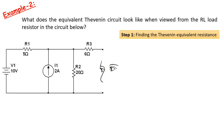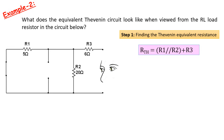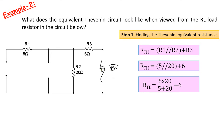Then we need to open-circuit the current sources and short-circuit the voltage sources. Here, we need to short-circuit the voltage source of 10 volts and open-circuit the current source of 2 amps. Now we can find the Thevenin equivalent resistance. Resistors R1 and R2 are in parallel, and resistance R3 is connected in series with them. 5 ohms and 20 ohms are parallel to each other and 6 ohms is in series. Since 5 ohms and 20 ohms are in parallel, the equivalent will be 4 ohms. Adding the series 6 ohms, we find the Thevenin equivalent resistance as 10 ohms.